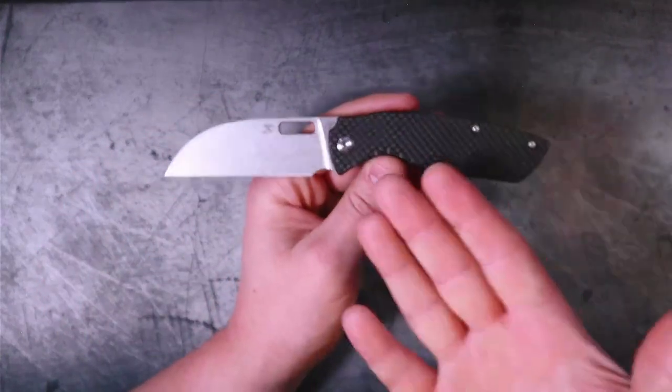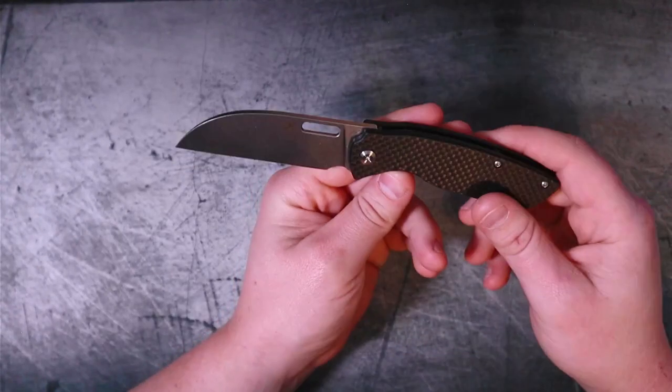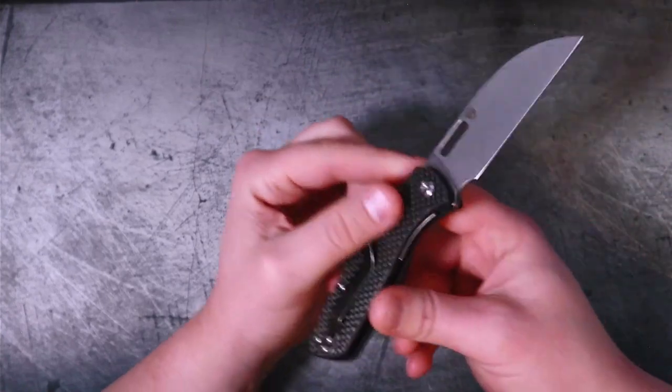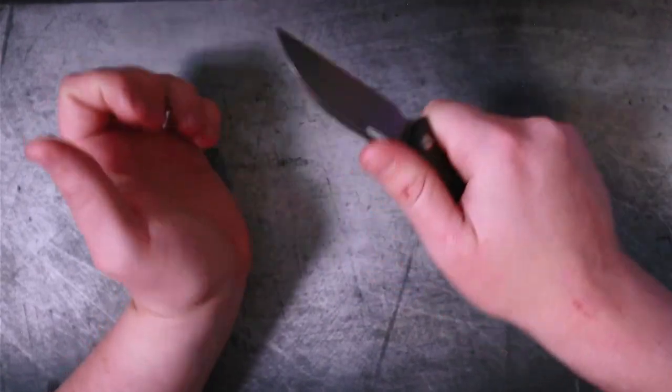I just tend to prefer single-sided captive pivots. There is no jimping, and people, look, when it comes to jimping, people are one of two minds. Either the first is I don't care about jimping, jimping has never done anything for me in my life, it doesn't pay my bills, I don't care if it's on my knife. The second crowd is like me, and I like having some jimping.